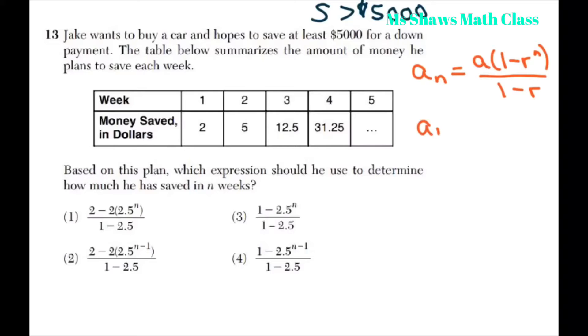Instead, though, they're distributing this a, which means your first term. So, I'm just going to let a equal your first term. They're distributing your a. So, you get a minus a r to the n divided by 1 minus r.